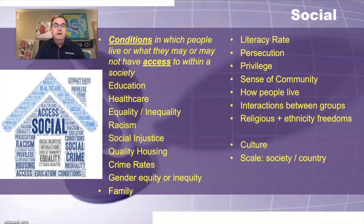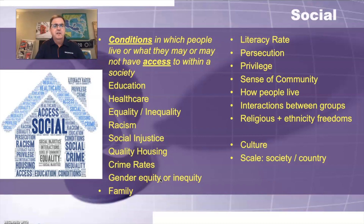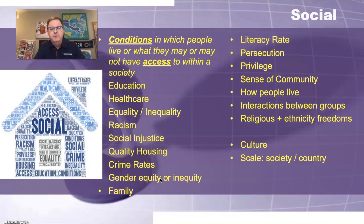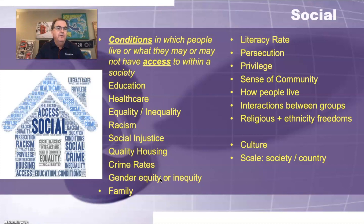Literacy rates — the ability of people to read and write up to an eighth grade level — relate to education. Persecution can be both social and political, so be precise about how you talk about it. Privilege — certain groups within a society have a benefit of privilege. Sense of community and interactions between groups — social has to do with how different groups within society interact. Religious and ethnicity freedoms and whether certain groups are persecuted or face inequality are also relevant. Usually when we talk about social, we're talking at the country or society level or a bigger community scale.